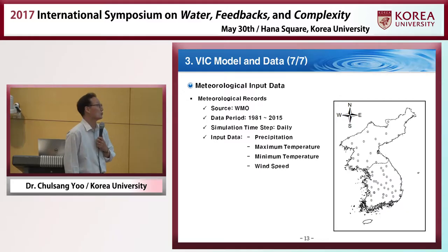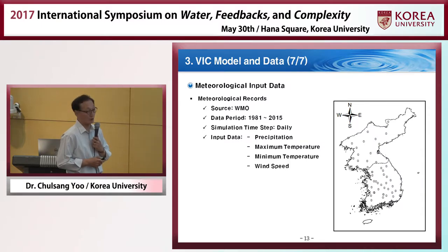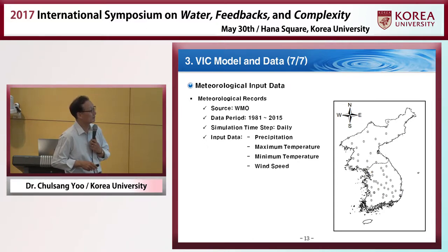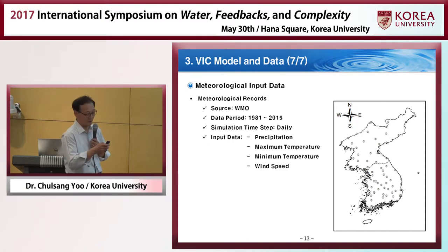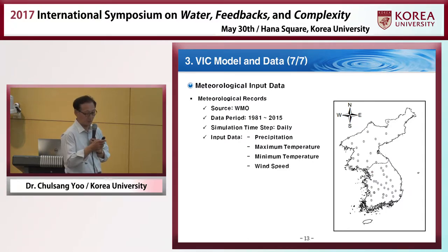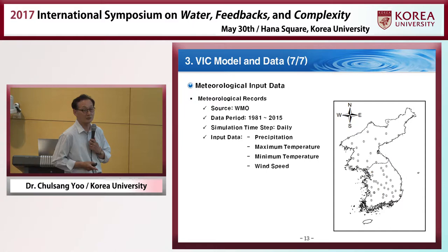For the simulation, we need meteorological data — one is precipitation and another is minimum and maximum temperature. This model also requires wind speed. We collected this information from WMO, and the information is available at these gauging stations. Not that many gauging stations were used in this simulation, so it is possible to have no information for some cells. In those cases, we extrapolated using the information available at nearby points.